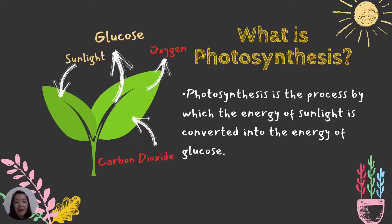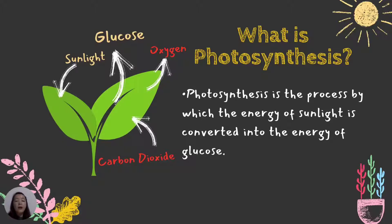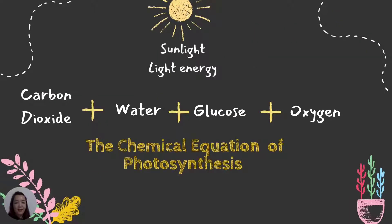The result of photosynthesis is glucose, or sugar — this is the food for the plants. Not only glucose, there is also oxygen as a waste product. Oxygen is very important for us to breathe.